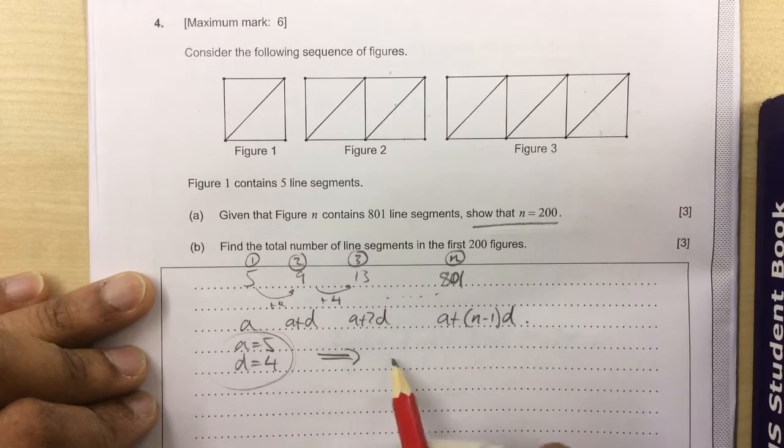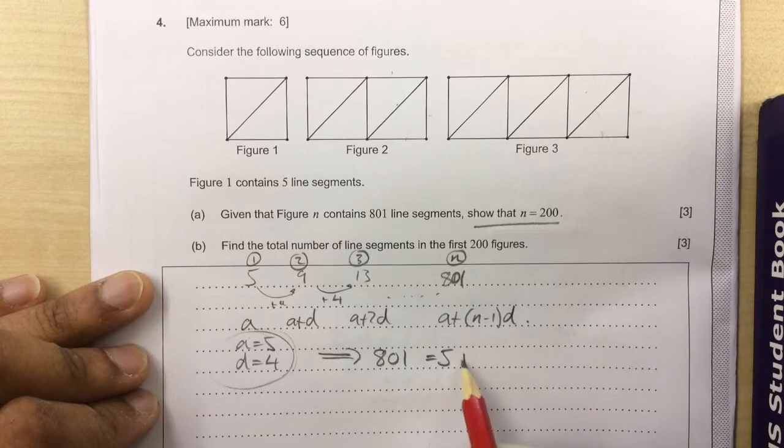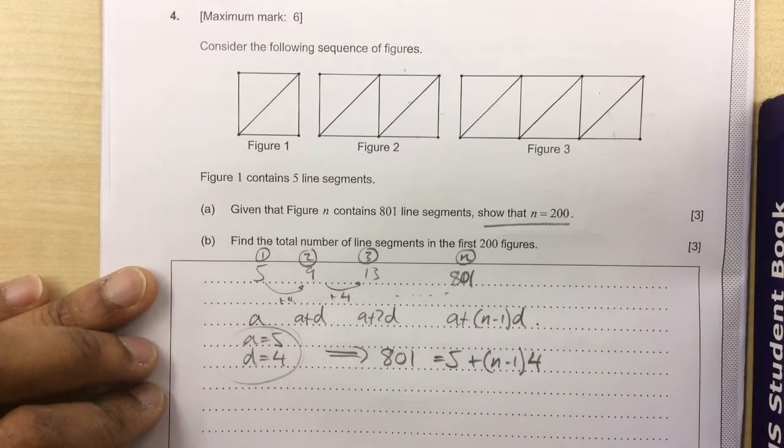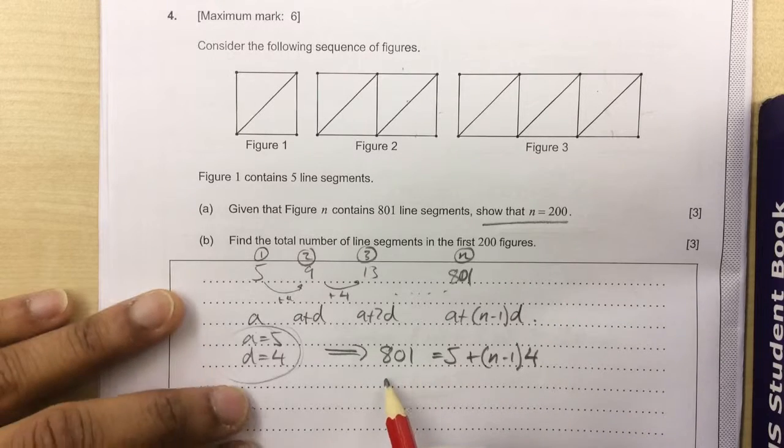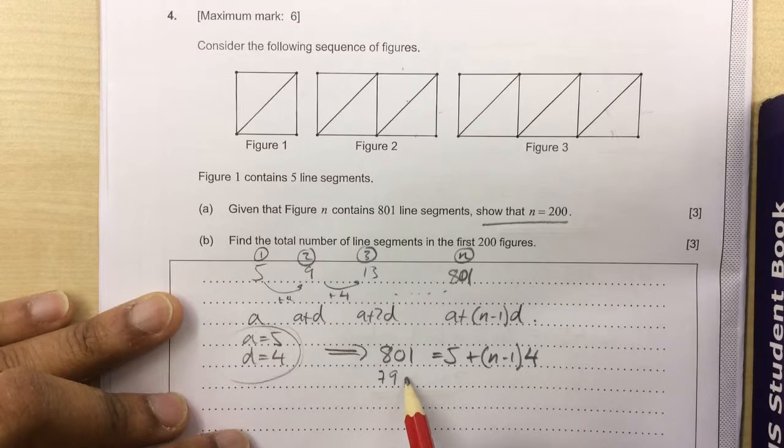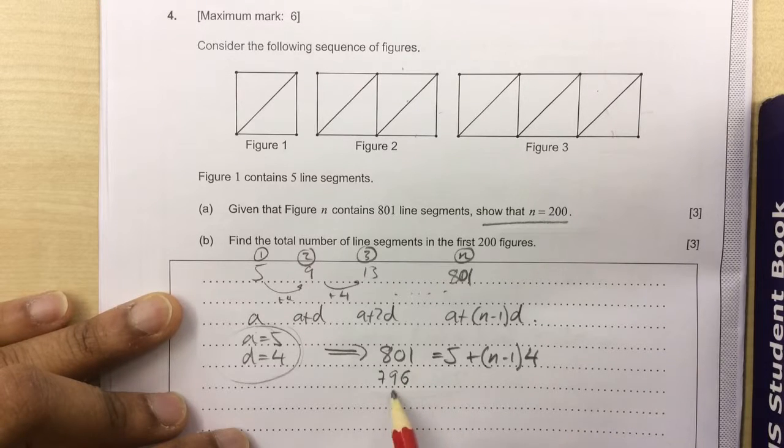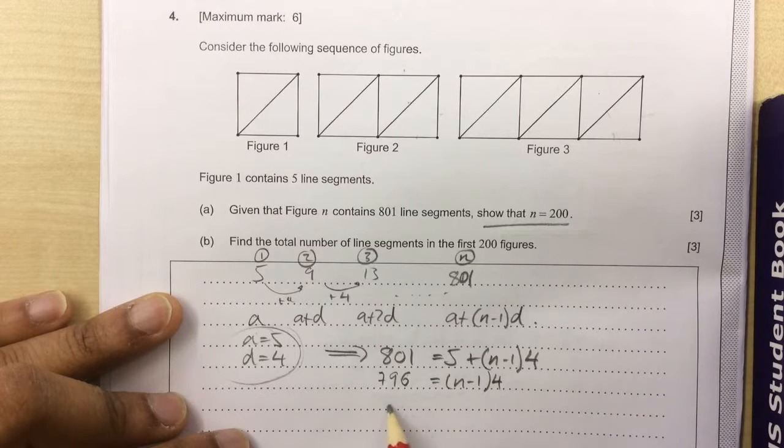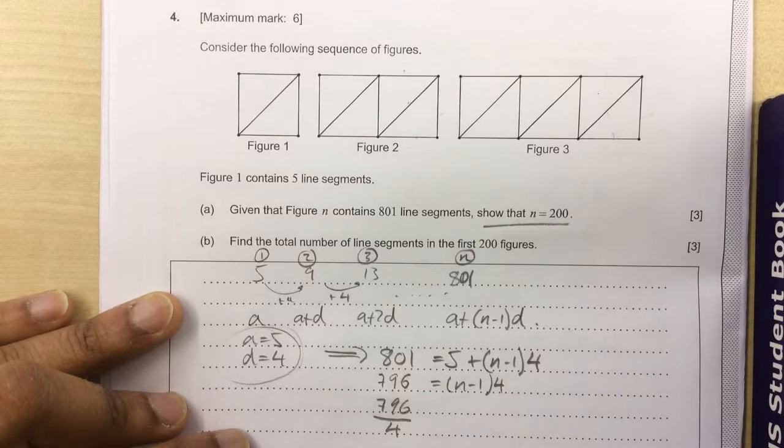Implying that 801 equals 5 plus N minus 1 times 4. So now we have to do the subtraction here. 801 minus 5 is 796. And that's equal to N minus 1 times 4. We do 796 and we can divide by 4. That's very close to 200.